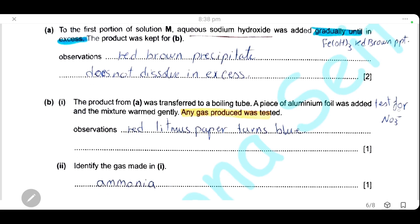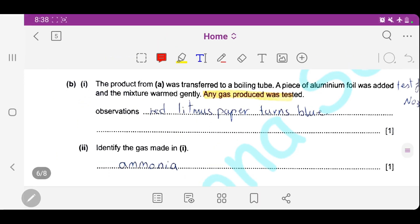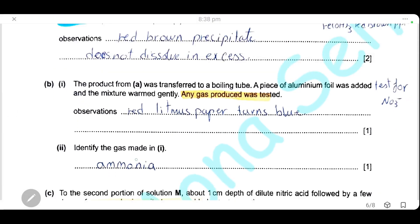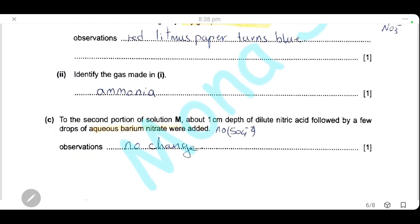When heating the nitrate solution with aluminum foil in a test tube, ammonia gas is produced. The observation is that red litmus paper turns blue — this is the test for ammonia gas. So the gas identified is ammonia.